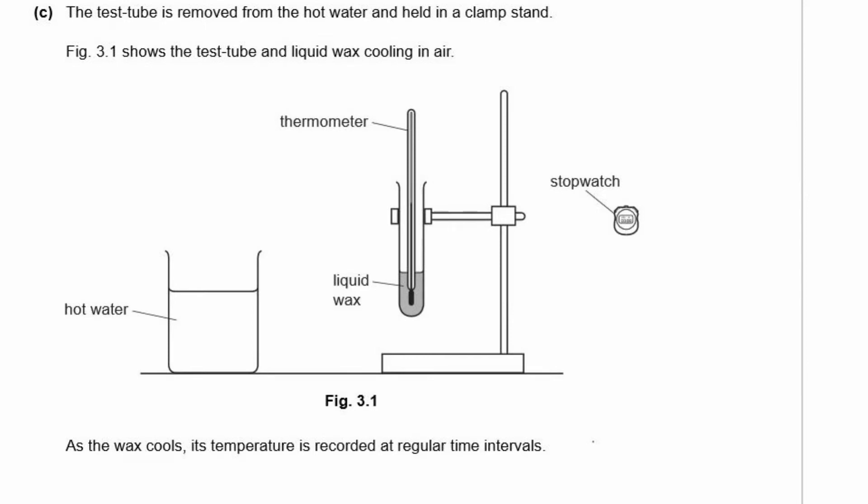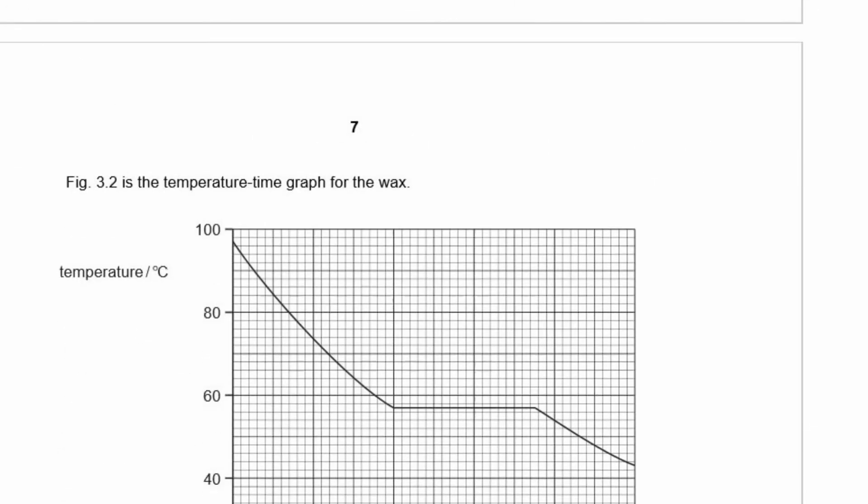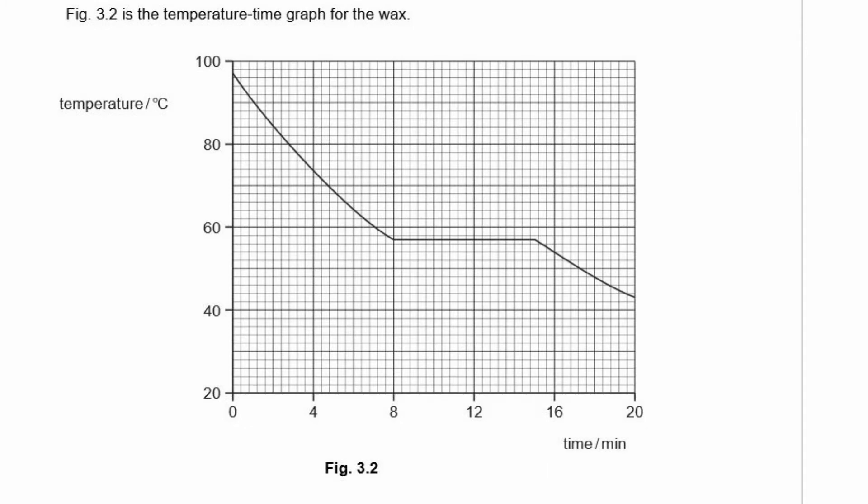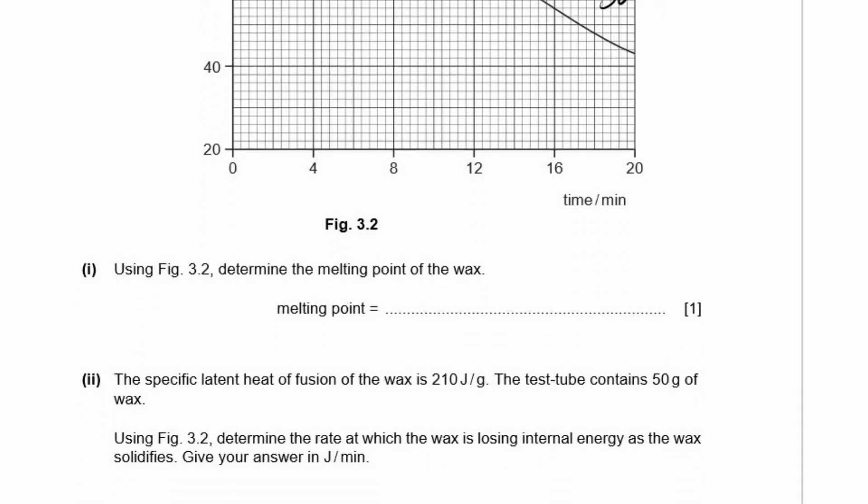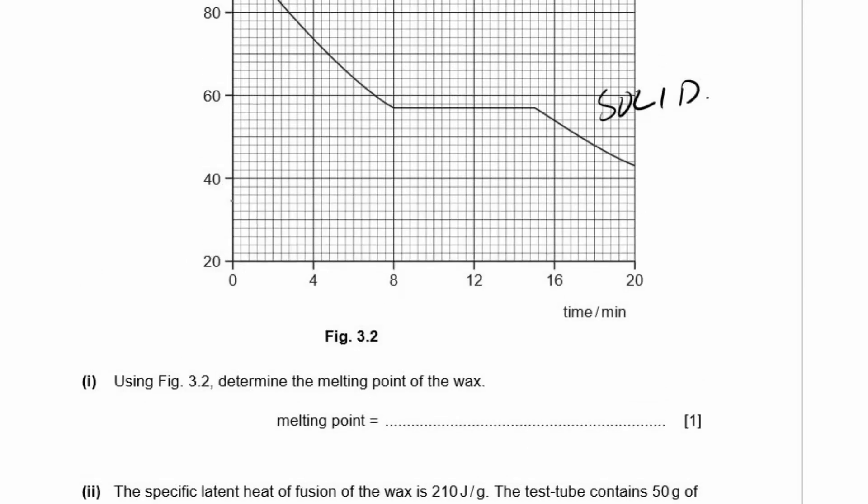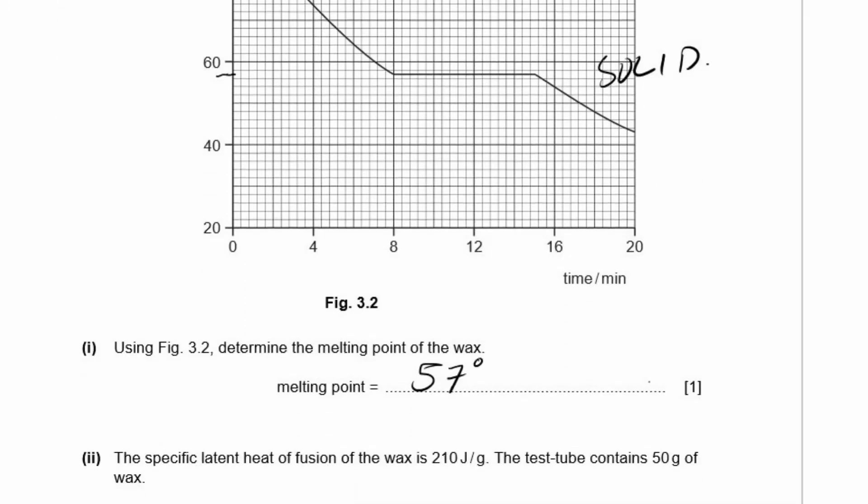The test tube is removed from the hot water and held in a clamp stand. Figure 3.1 shows the test tube and the liquid wax cooling in air. As the wax cools, its temperature is recorded at regular time intervals. Figure 3.2 is the temperature time graph for the wax. Because it's in the test tube, it must be a liquid. A gas would escape. So it's going from a liquid to a solid. Part one: using figure 3.2, determine the melting point of the wax. The melting point is the same as the point where it starts to turn from a liquid into a solid. That is, I think, 57 degrees Celsius.